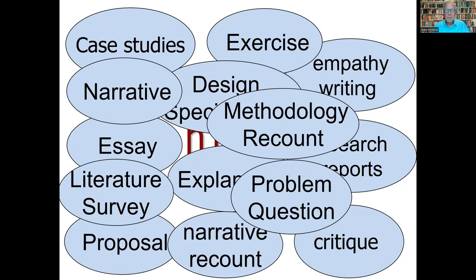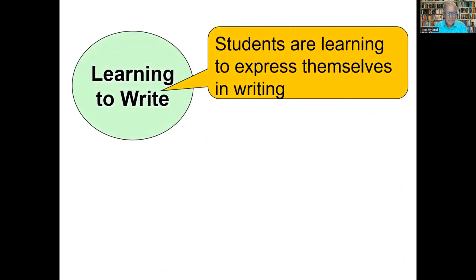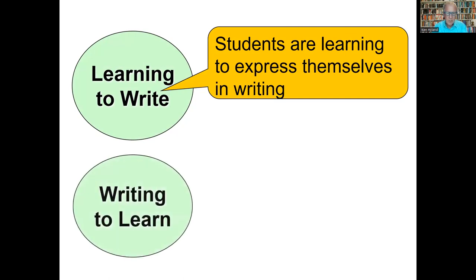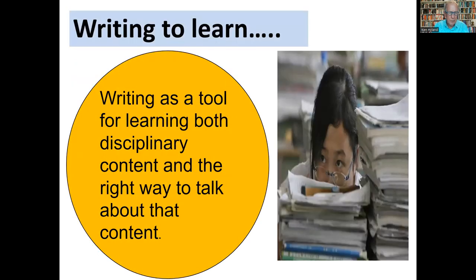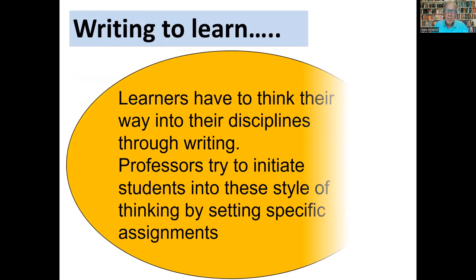There's an important distinction made by Machon between learning to write, where students are learning to express themselves in writing, and writing to learn, where they're writing to develop their expertise in the content of a discipline. Writing to learn sees writing as a tool for learning disciplinary content and the right way to talk about that content. So this tells us that learners have to think their way into their disciplines through writing.